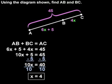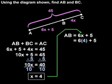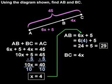Now we can plug 4 back in for the x's in the original problem to find the lengths of segments AB and BC. So the length of segment AB, which is 6x plus 5, is 6 times 4 plus 5, which simplifies to 29. And the length of segment BC, which is 4x, is 4 times 4 or 16.